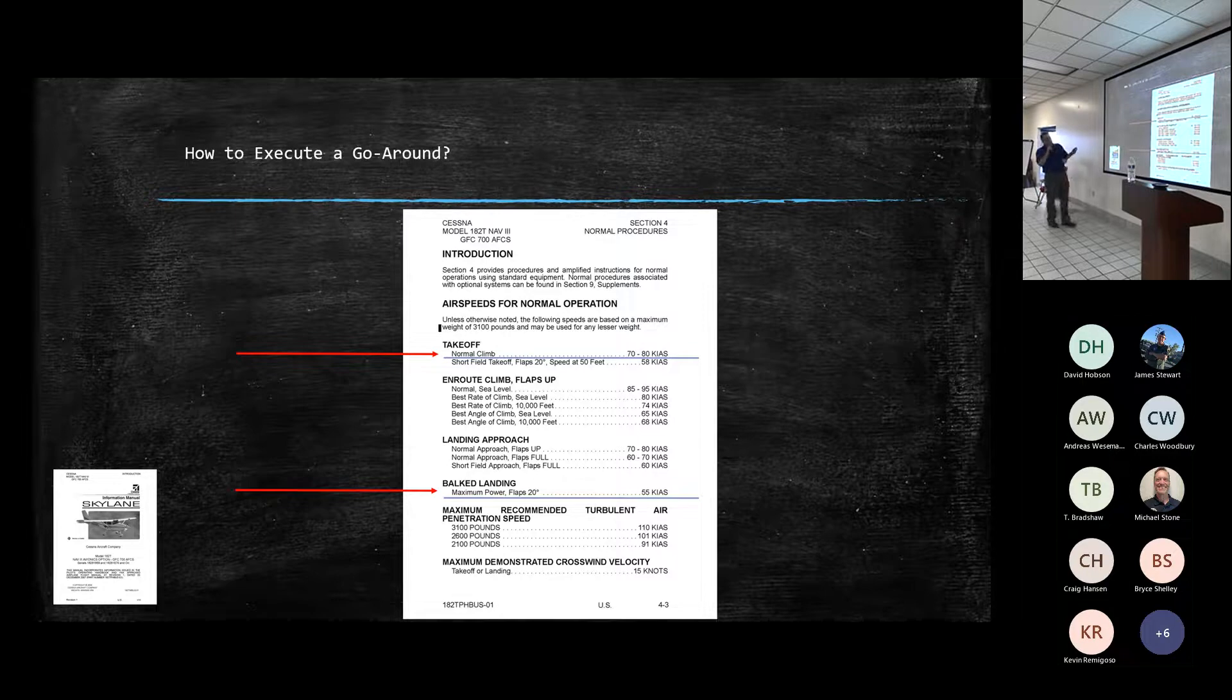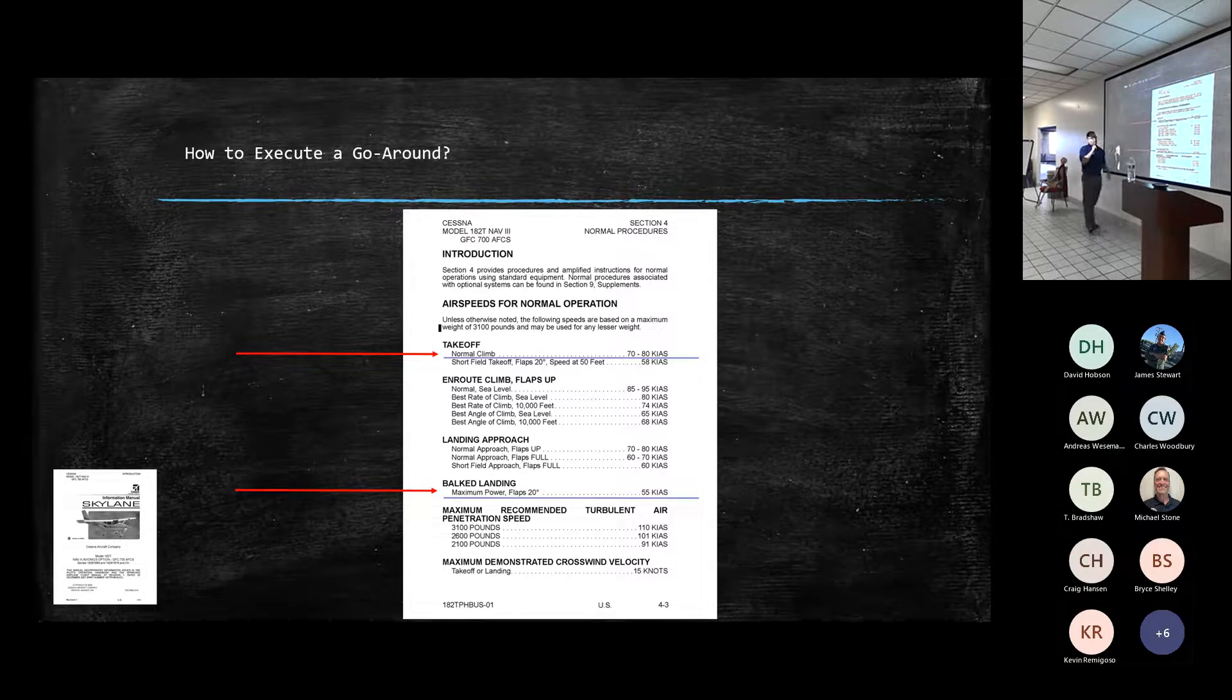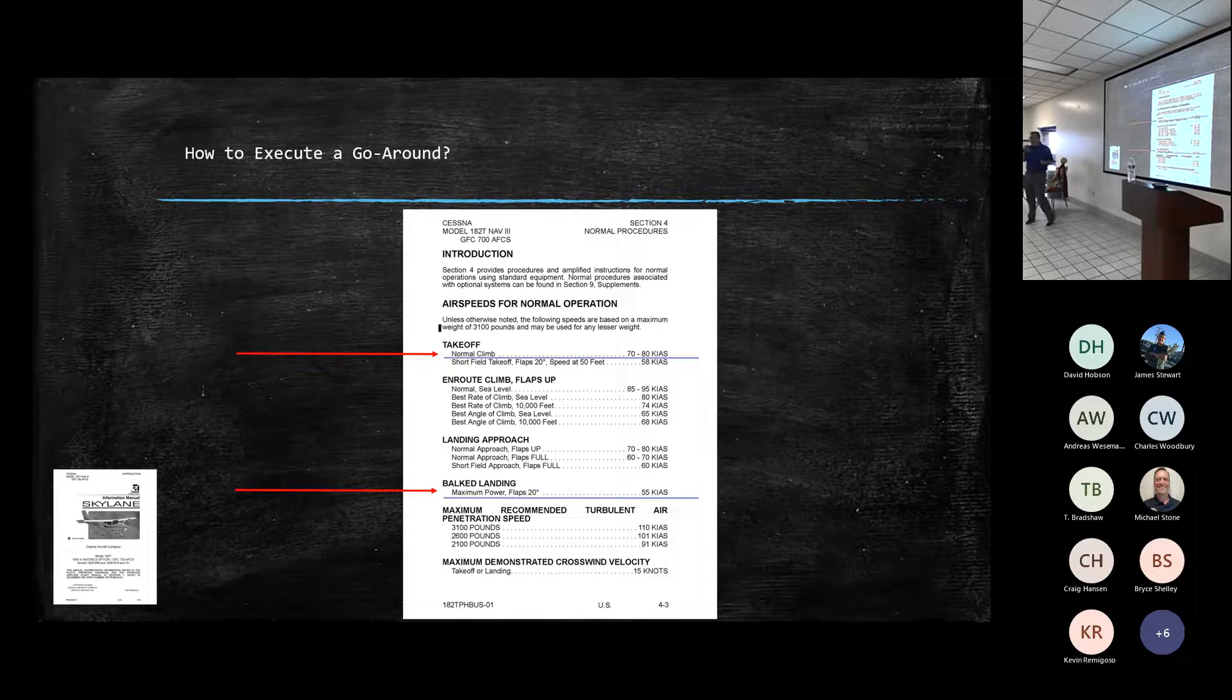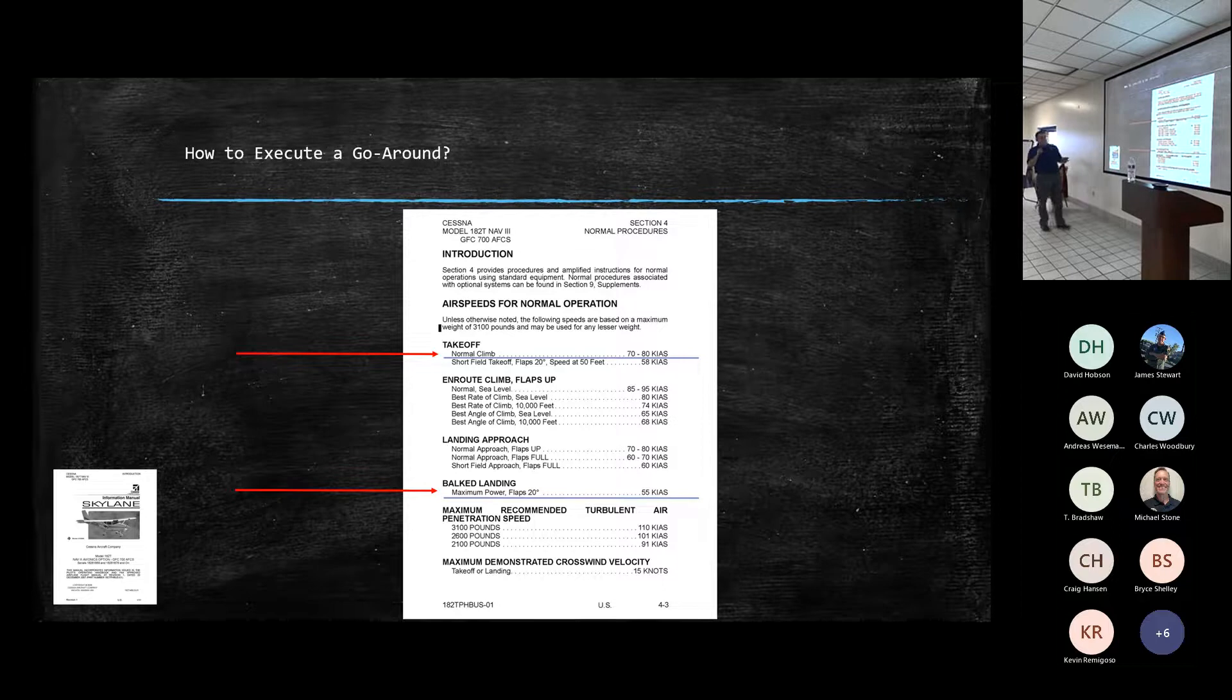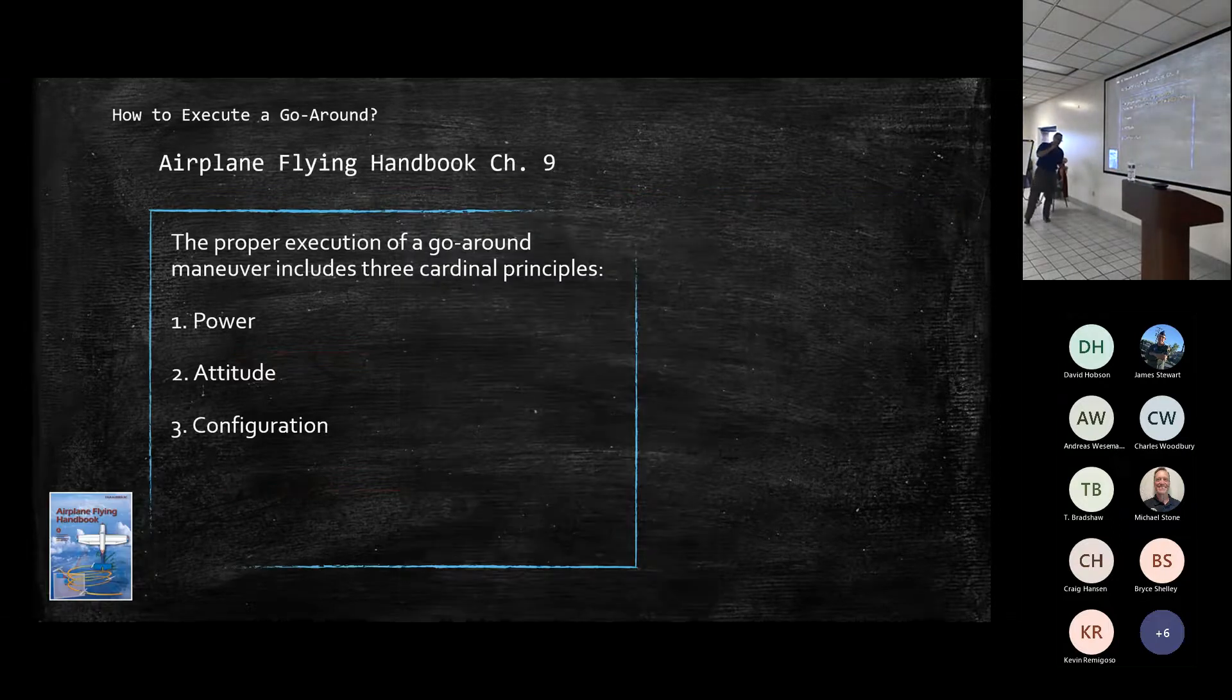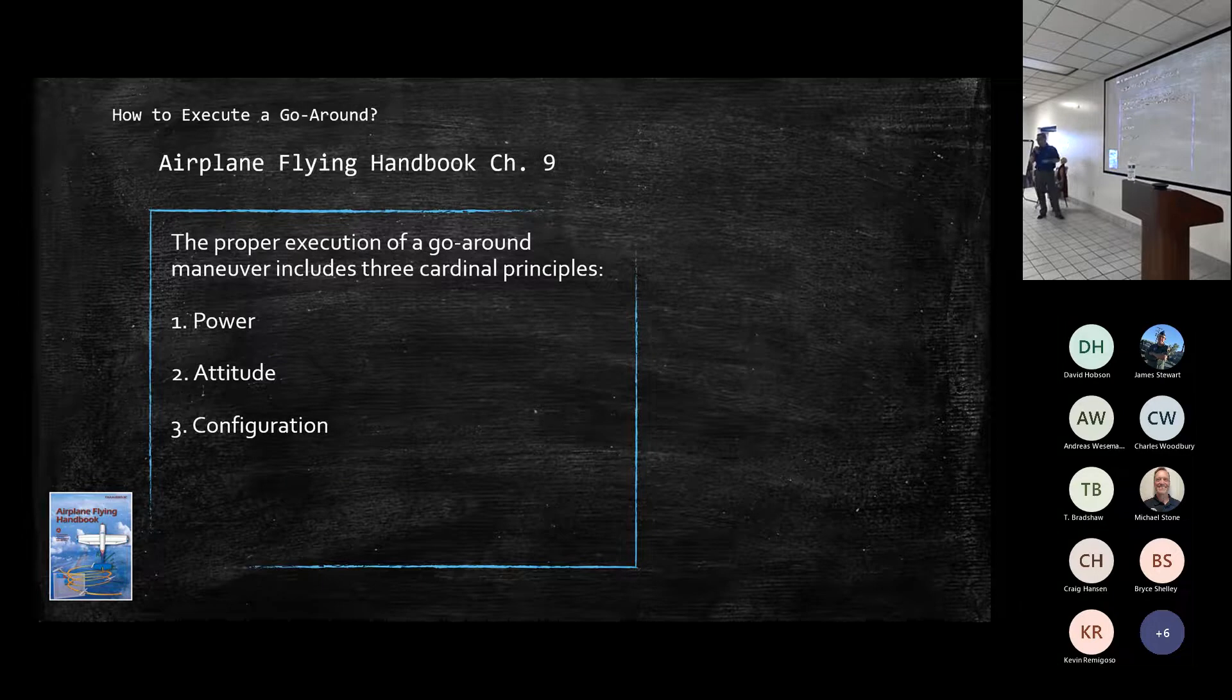So looking in here for what a normal climb is, it specifies here just under the general information, the 70 to 80 knots normal climb, targeting VX, VY is appropriate. Then as we come in here for the box landing, essentially just reemphasizing that you're getting that full power, 20 degree flaps, and climbing out at 55 knots. That's all we get out of our AFM on this, so we do have to seek a little bit more clarification.